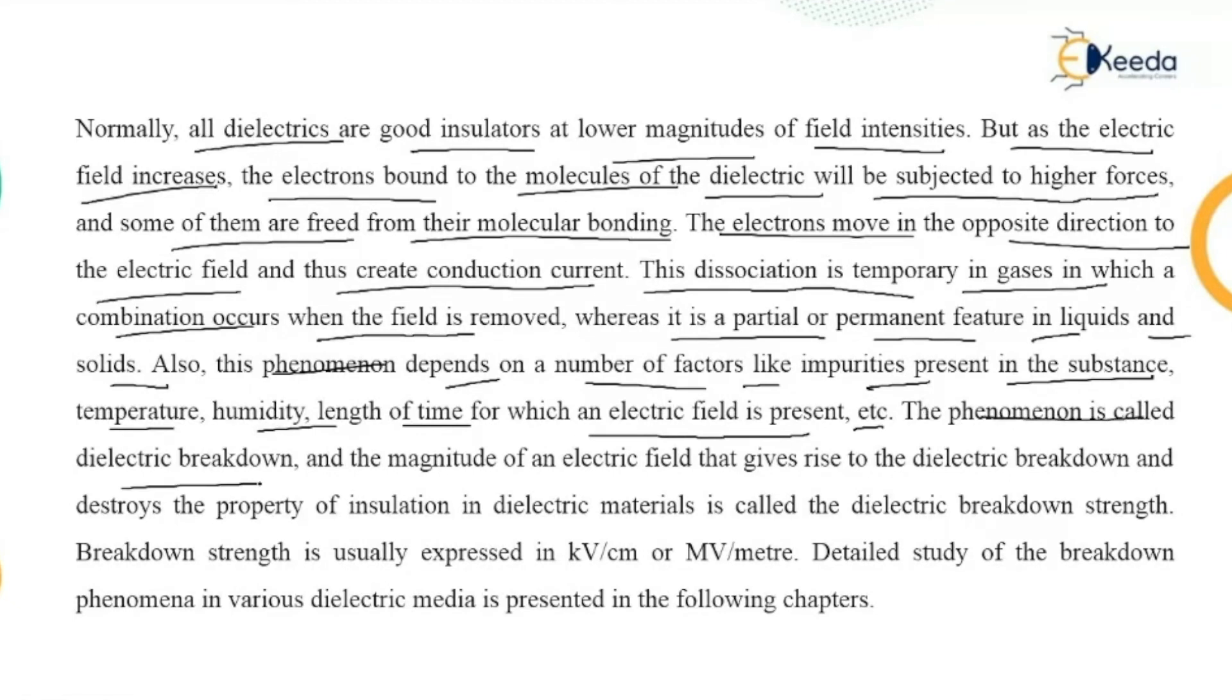Also, this phenomenon depends upon a number of factors like impurities present in the substance, temperature, humidity, length of time for which an electric field is present, etc. The phenomenon is called dielectric breakdown, and the magnitude of an electric field that gives rise to dielectric breakdown and destroys the property of insulation in dielectric materials is called the dielectric breakdown strength. Breakdown strength is generally expressed in kilovolt per centimeter or megavolt per meter.